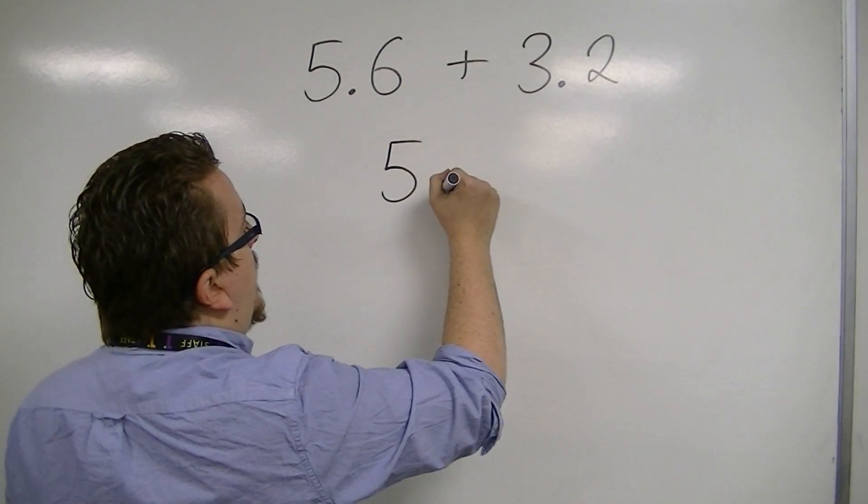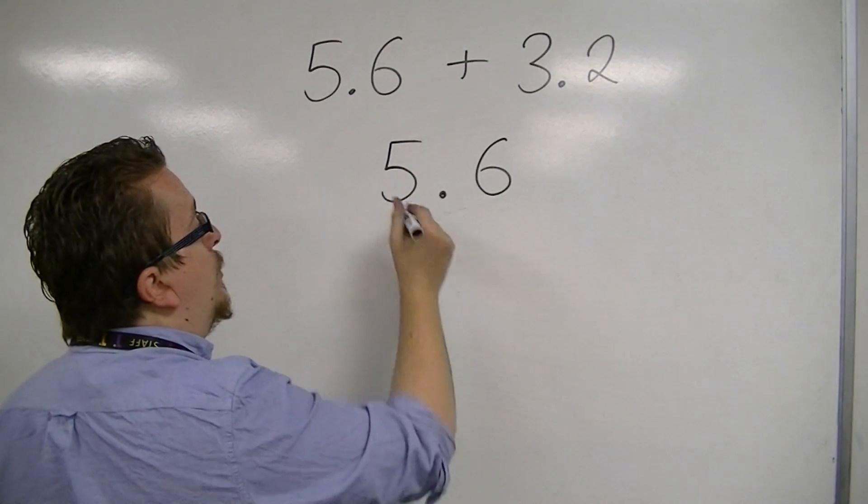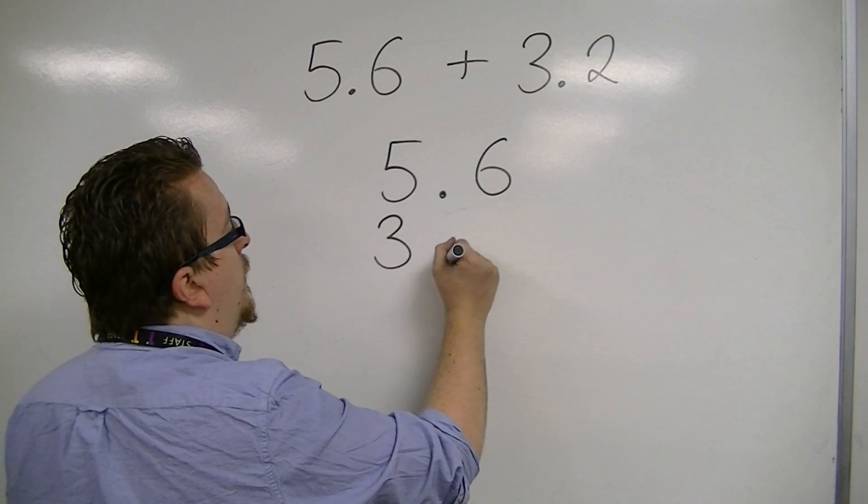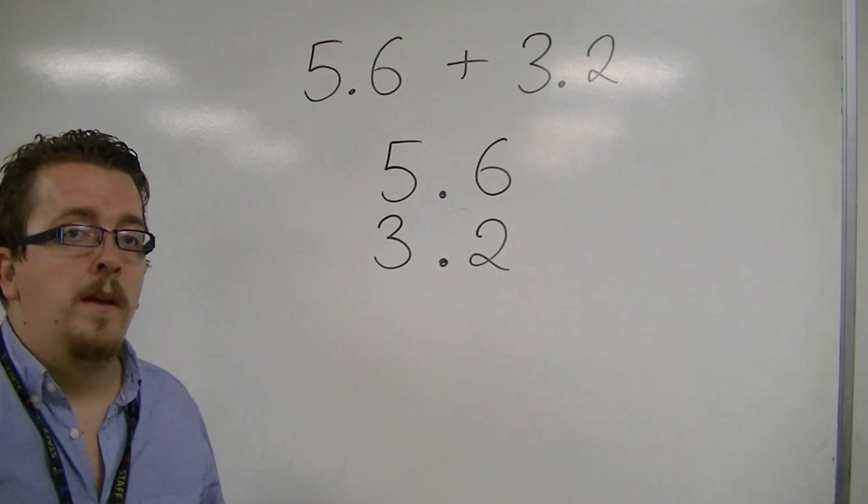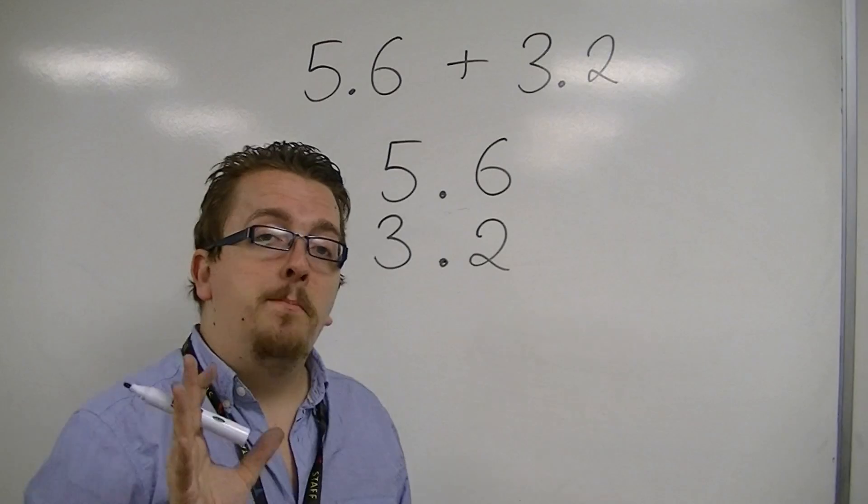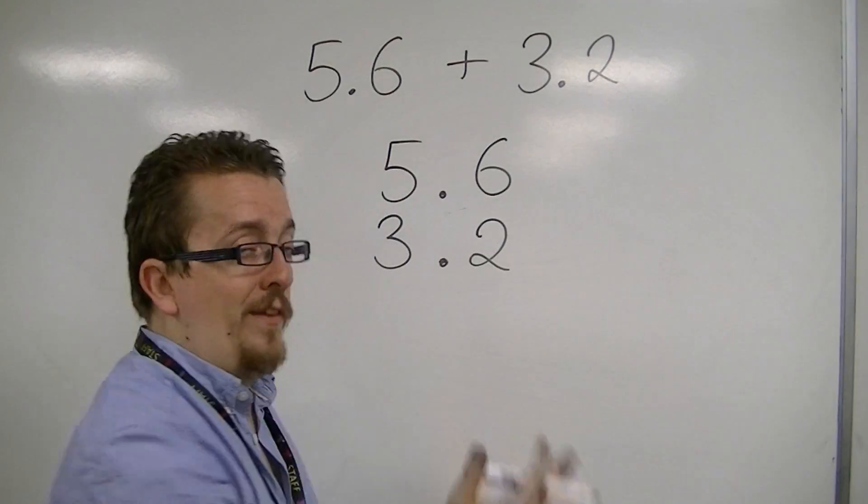then in exactly the same way as before, you need to make sure that the place values line up. And the easiest way to do that is to make sure that the decimal points line up.